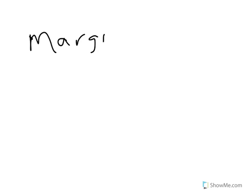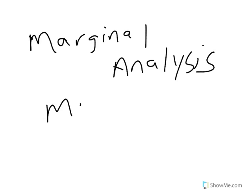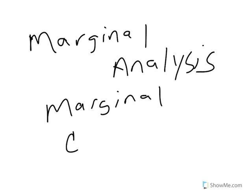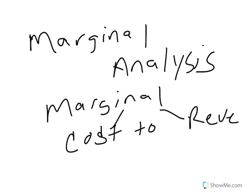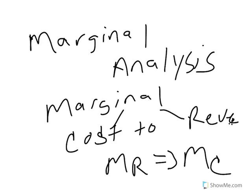So if you remember from the chapter and the lecture, we talked about how optimal decisions are made at the margin. In order to find those optimal decisions, economists perform what's known as a marginal analysis. A marginal analysis simply compares marginal cost to marginal revenue, and the rule of thumb is that a company will produce as long as marginal revenue is equal to or greater than marginal cost.